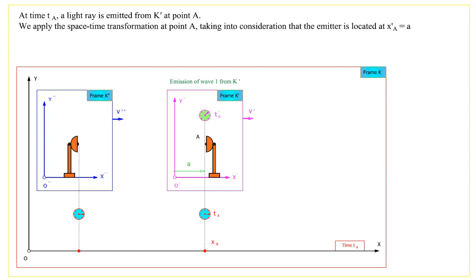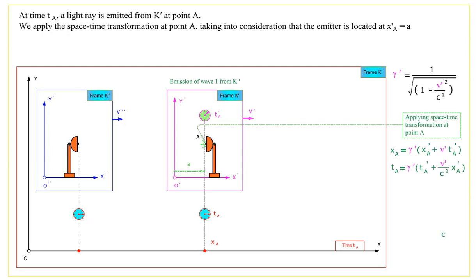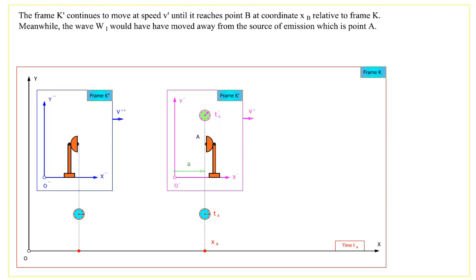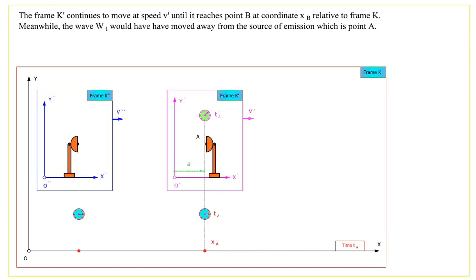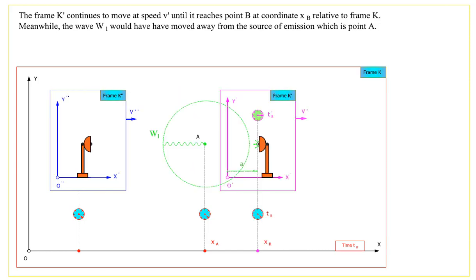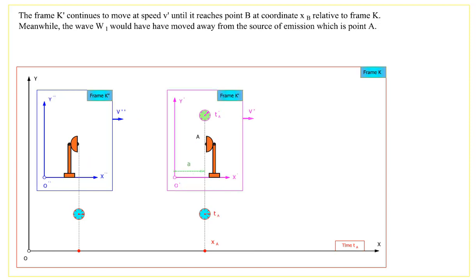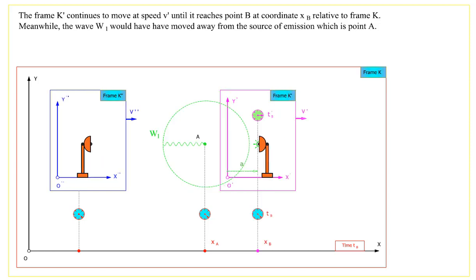We apply the spacetime transformation at point A, taking into consideration that the emitter is located at X'A equals A. The frame K' continues to move at speed V' until it reaches point B at coordinate XB relative to frame K. Meanwhile, the wave W1 would have moved away from the source of emission, which is point A.